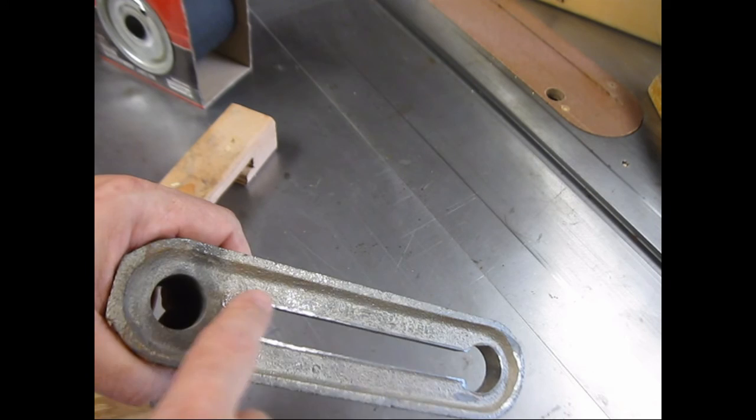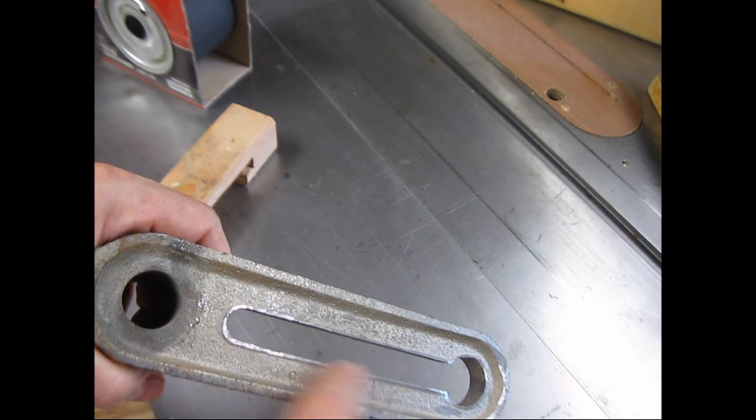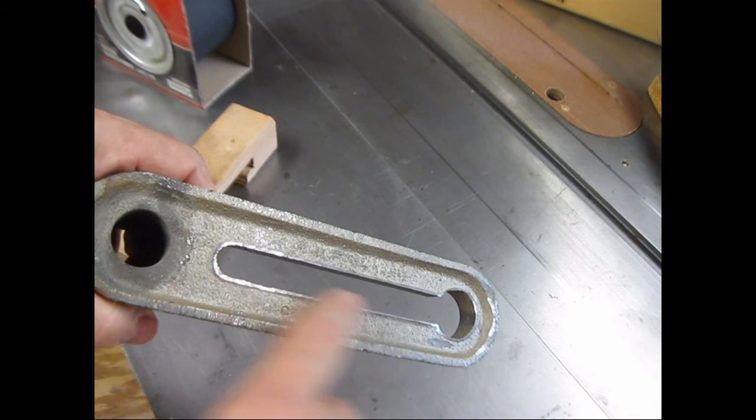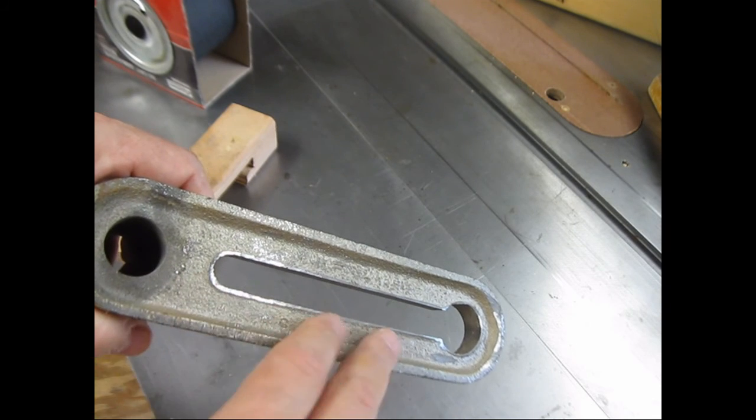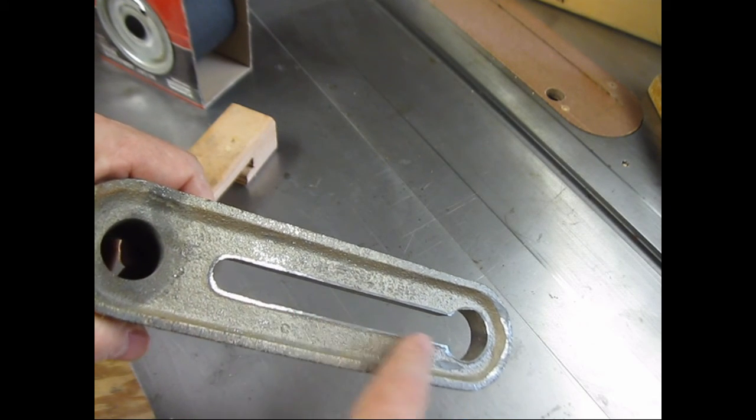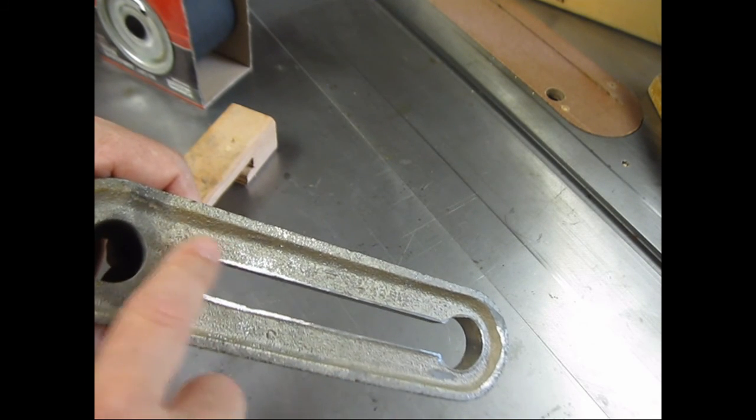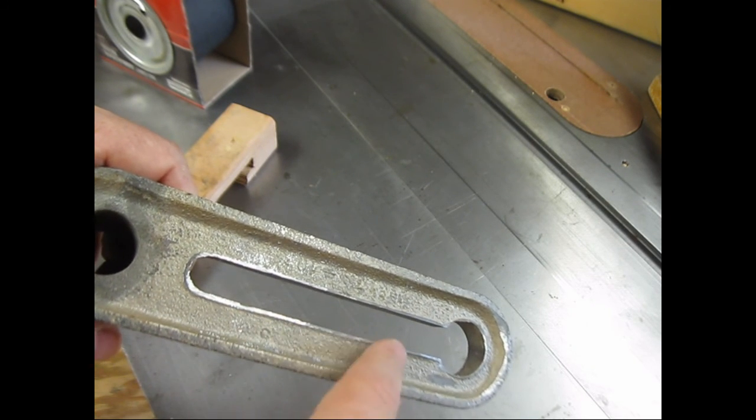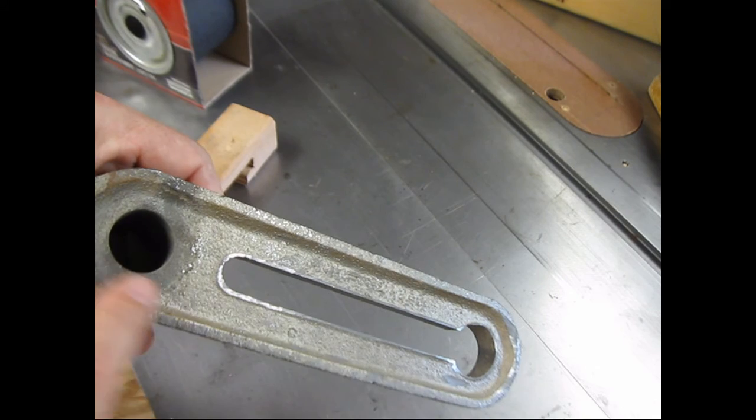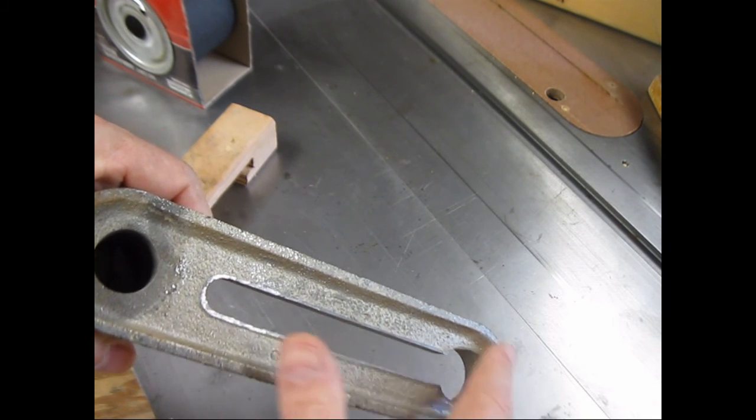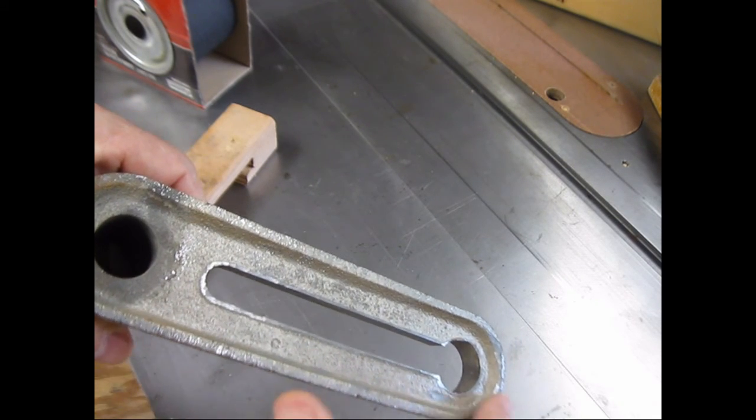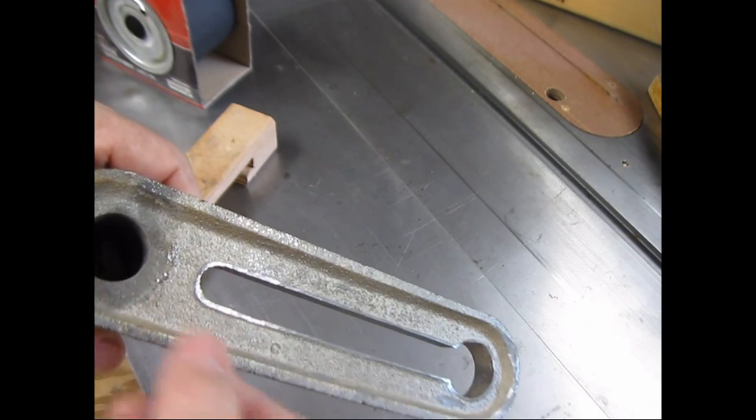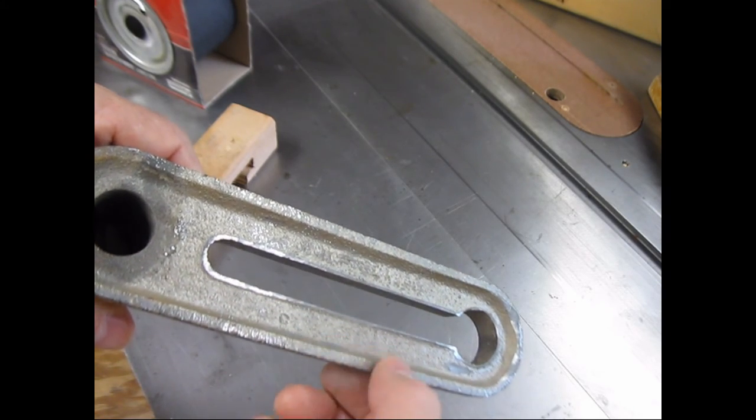What I did off camera was take my grinder and remove a lot of casting flash that was on the bottom of this banjo. It interfered with smooth movement, wasn't entirely necessary, but it will help a little bit. The next thing I'm going to do is take this and flatten this piece here because it's also very rough from the casting.